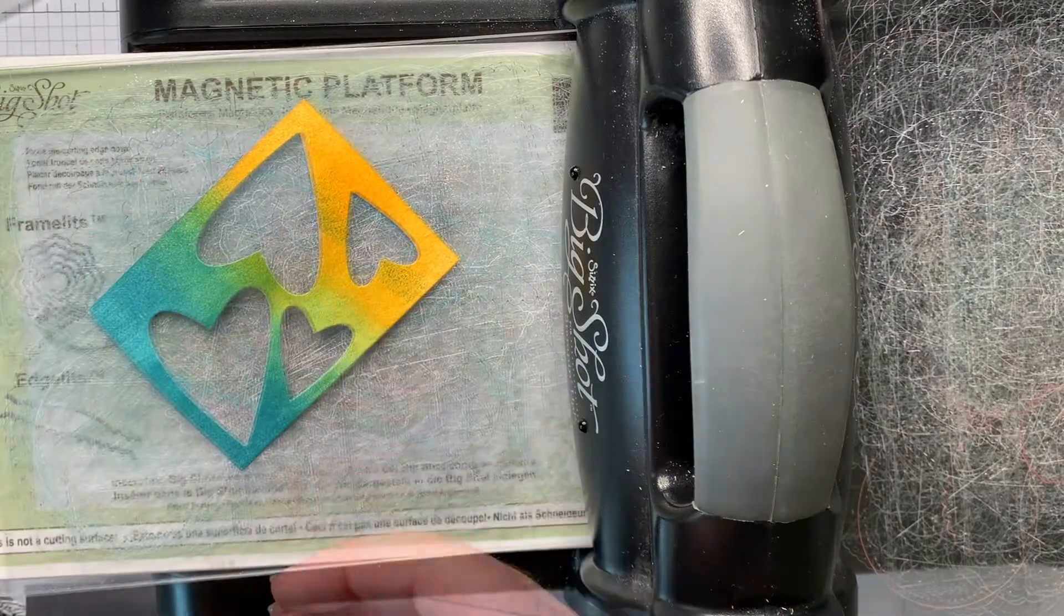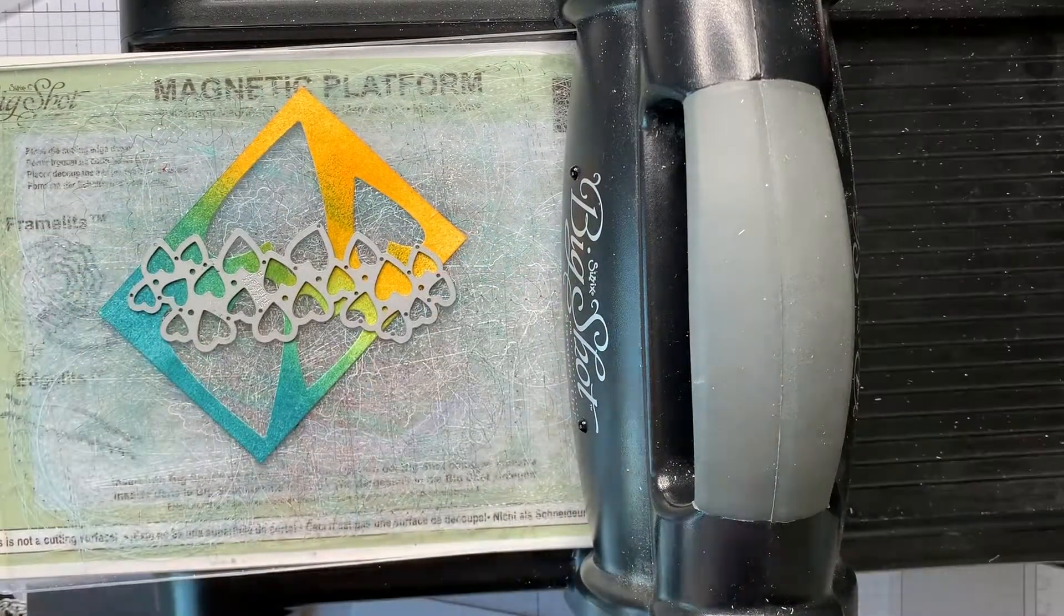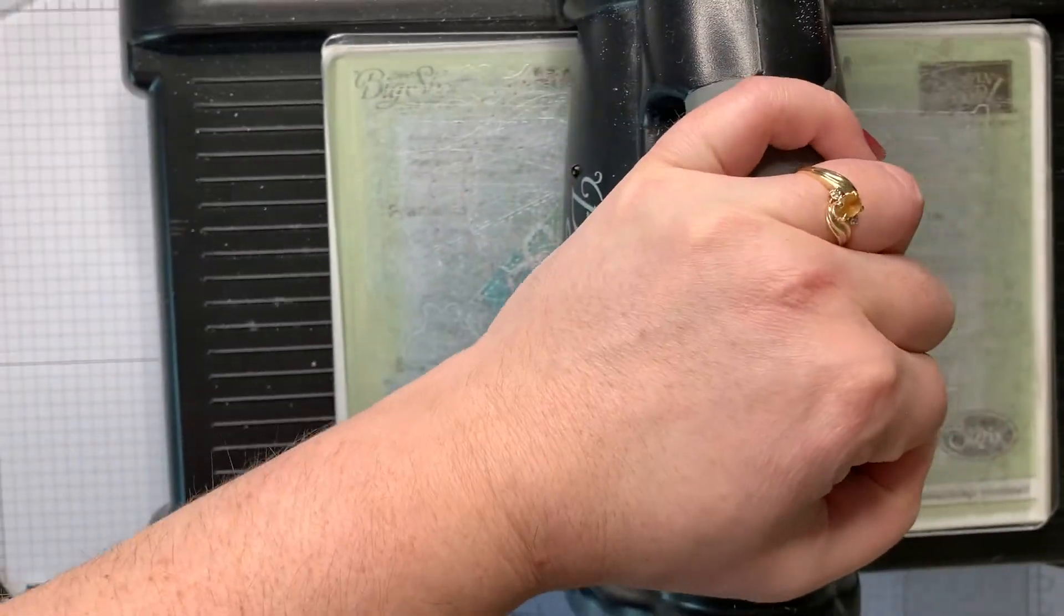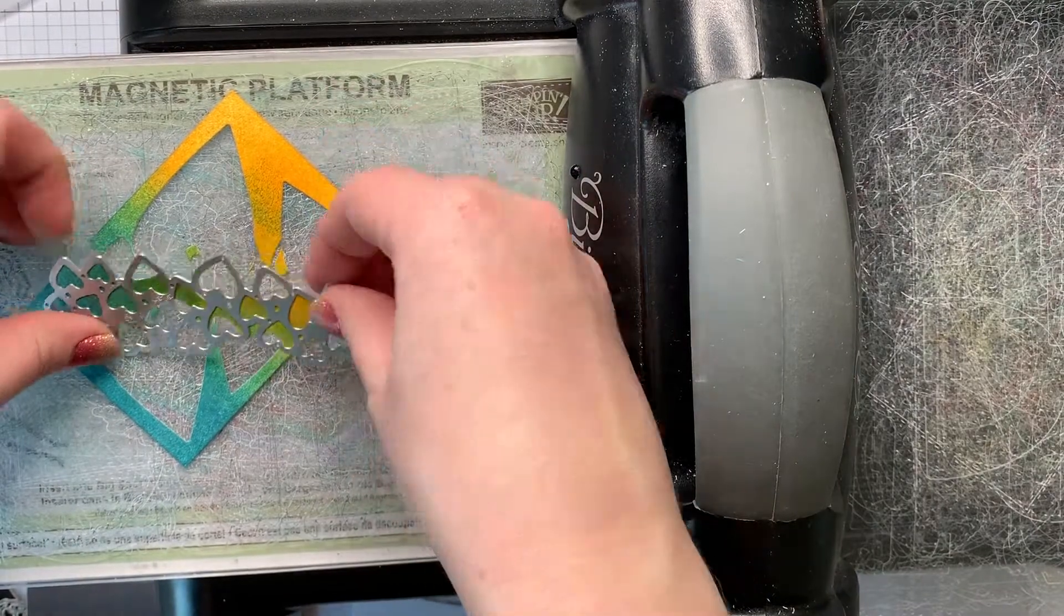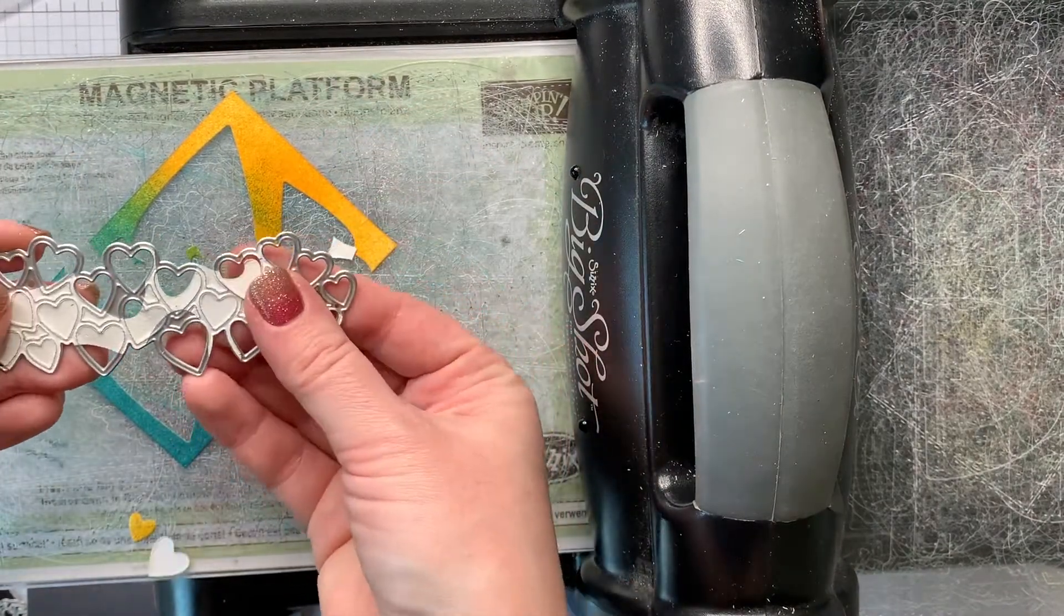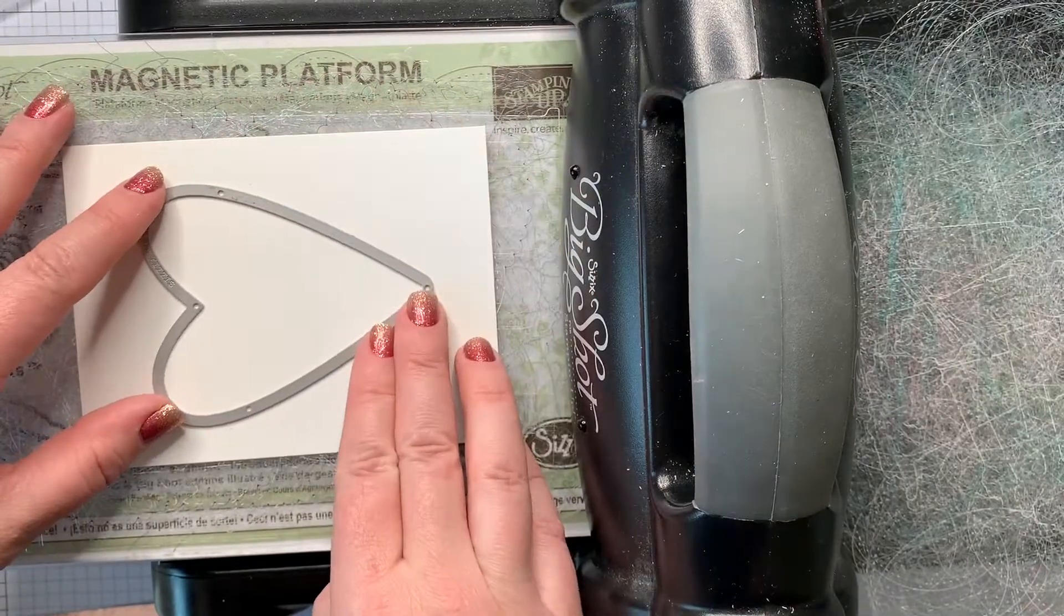Even when you think you've used as much of the cardstock as possible, I'm sure you have some small dies that could cut out a few more pieces. That's where I took this heart die that has lots of these little hearts on it and I just ran that through and I was able to get quite a few extra pieces out.